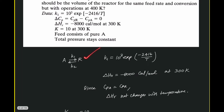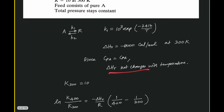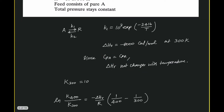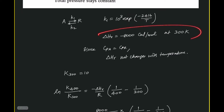For the reaction, K1 is available as a function of temperature. We are given the heat of reaction at 300 Kelvin, and since Cp of feed and product are the same, the heat of reaction does not change with temperature. The heat of reaction at the reaction temperature equals heat of reaction at standard conditions plus delta Cp of products minus reactants multiplied by delta T. Since delta Cp equals zero, delta H of reaction is constant at any temperature.